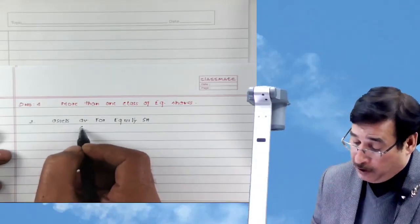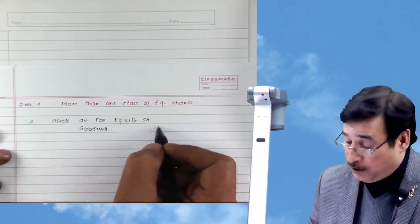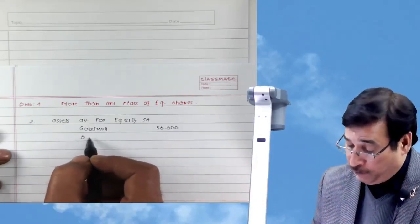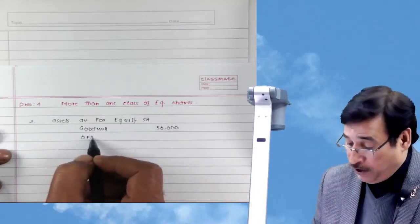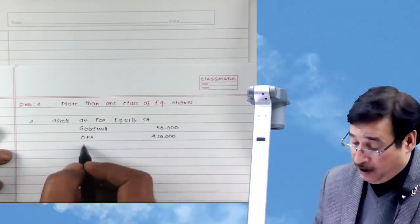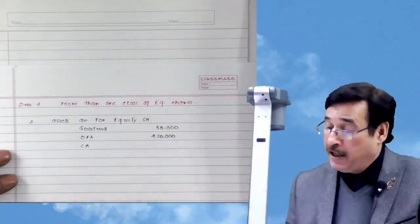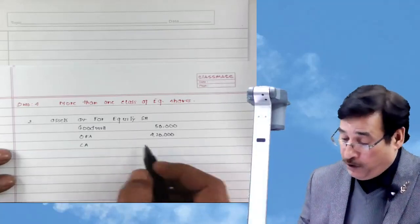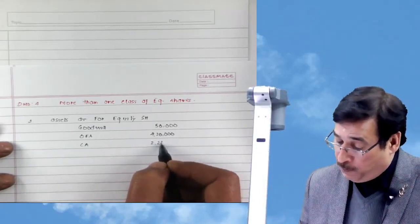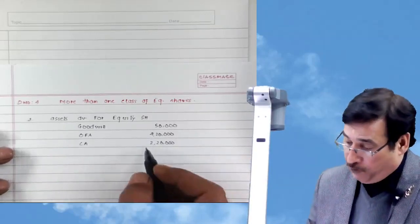We will consider all assets including goodwill. Goodwill is given at ₹50,000. Besides goodwill, we have other fixed assets valued at ₹4 lakh 20,000 — if revised values are given, you take those. Current assets are ₹2 lakh 20,000; there is no revised value so we take book value. So these are your assets.